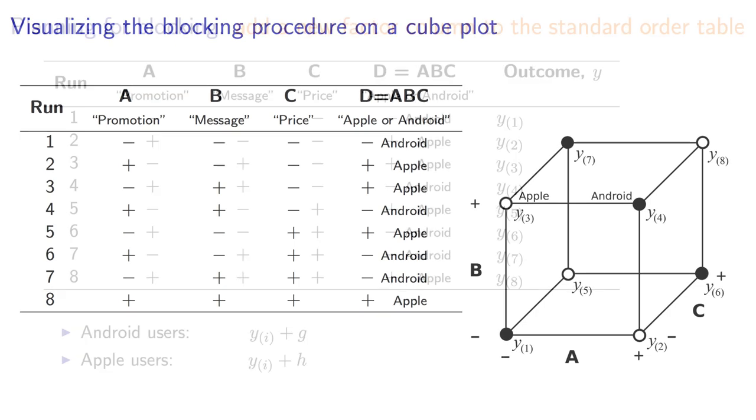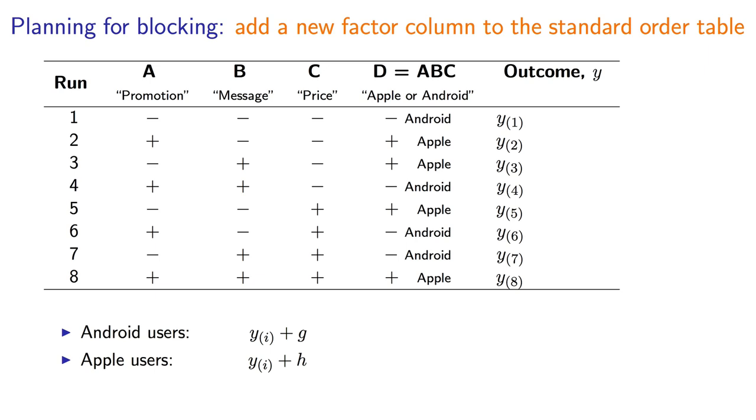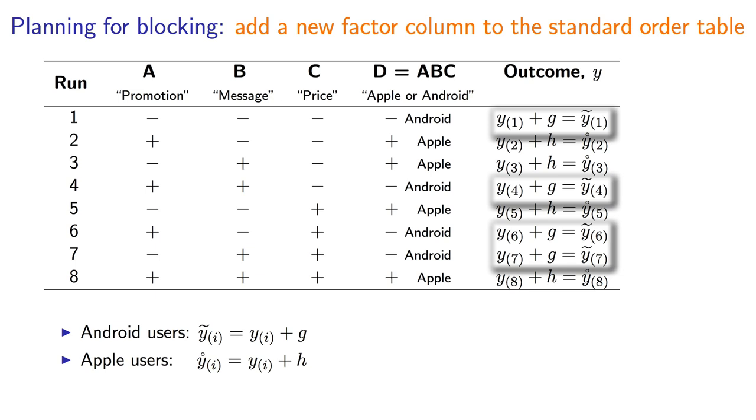Imagine that there really is an effect that Android users are more likely to keep using your app, and that Apple users are less likely. We can imagine that our outcome variable for Android users is boosted by a consistent amount, g, and I will put a small tilde over these numbers to indicate that. The results involving Apple users are reduced by some amount h, where h is a negative number, and I'll add a small circle above their outcomes.